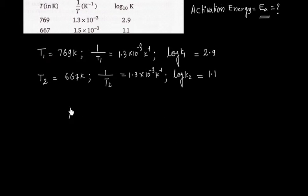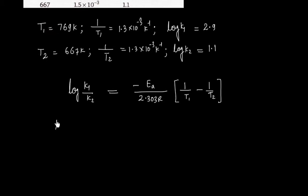Now we can use this formula. Log K1 by K2 is equal to minus Ea by 2.303R, 1 by T1 minus 1 by T2. Log K1 by K2 is log K1 minus log K2.